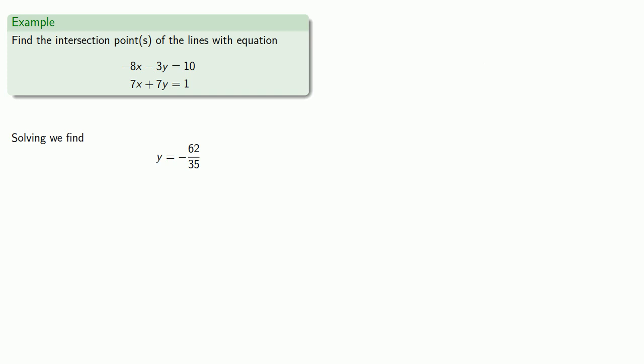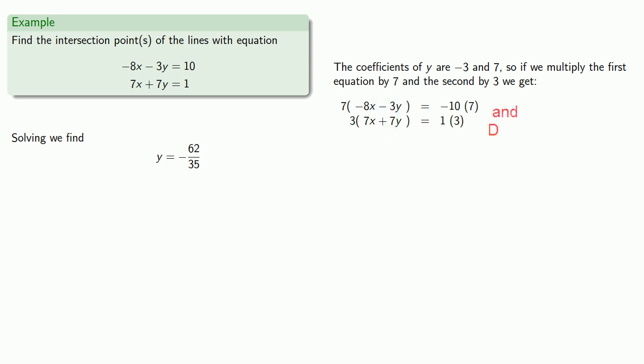So let's solve for x in the same way. This time we see that the coefficients of y are -3 and 7. So if we multiply the first equation by 7 and the second by 3, we get...